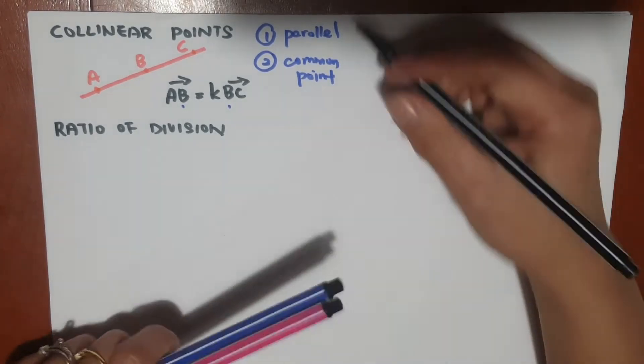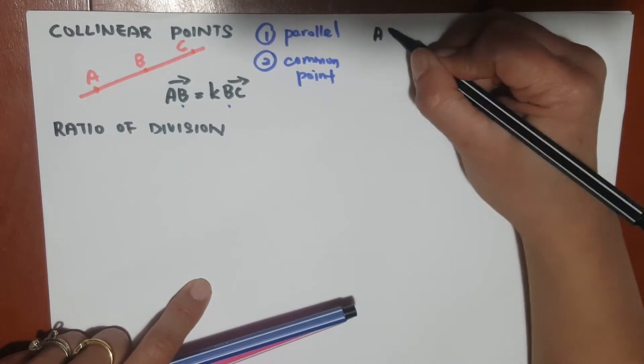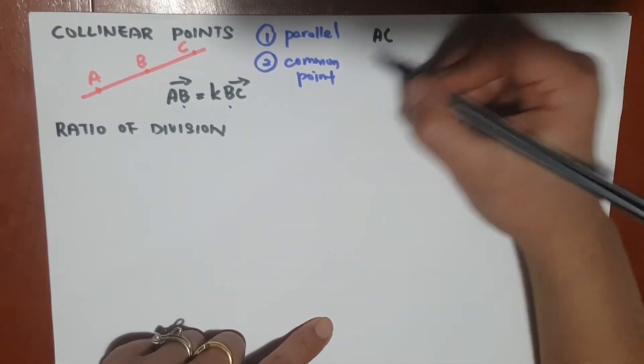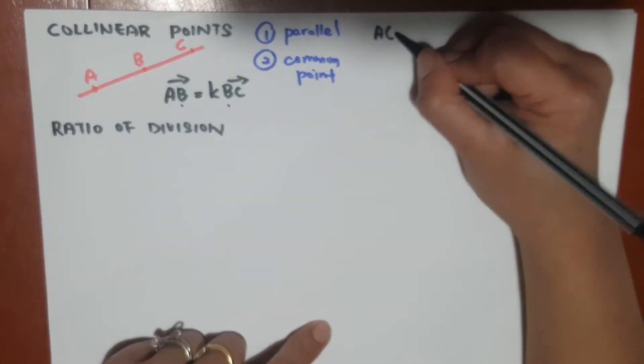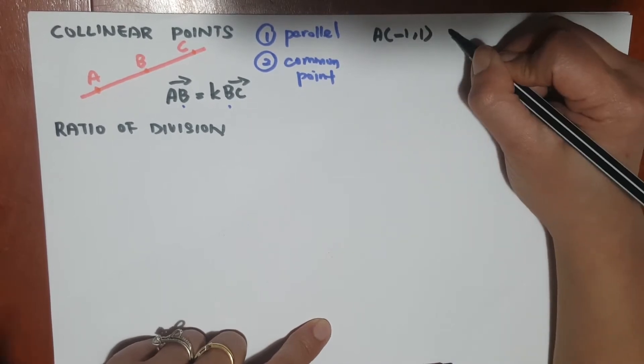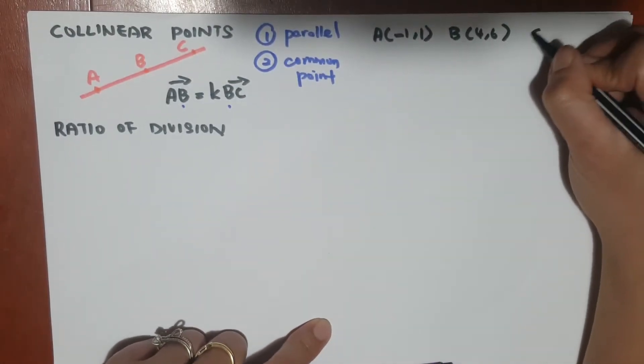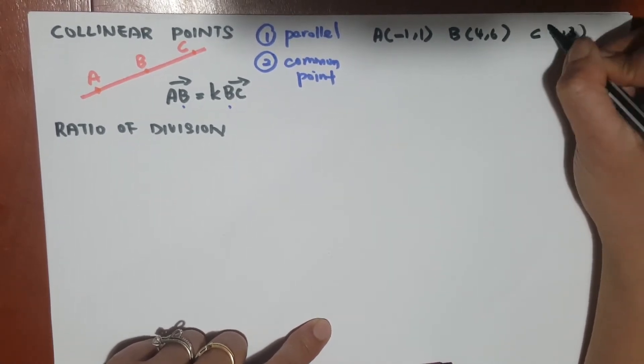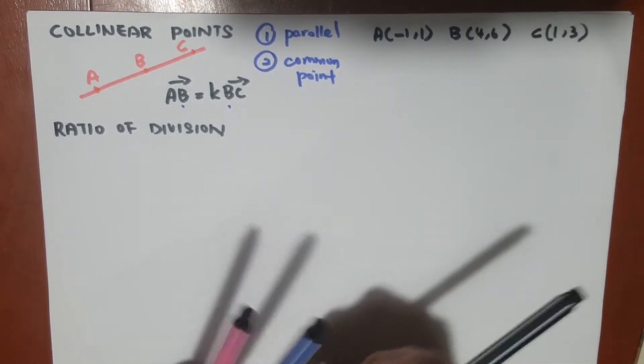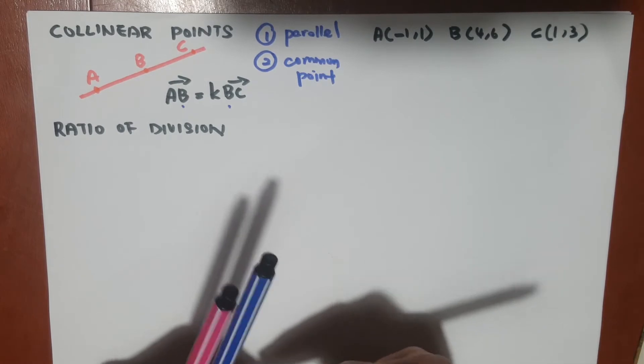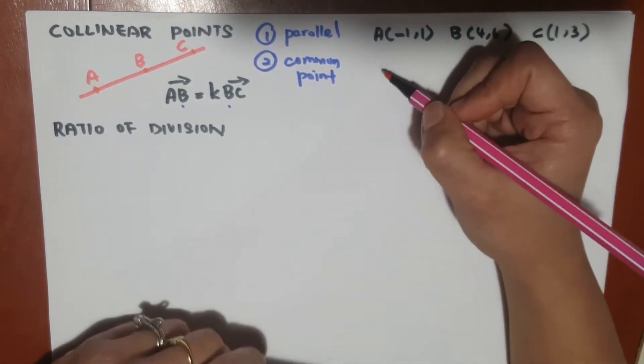For example, if we have a question: show that these points are collinear. Let's say I have A, which is (-1, 1), and I have B, which is (4, 6), and I have point C, which is (1, 3).